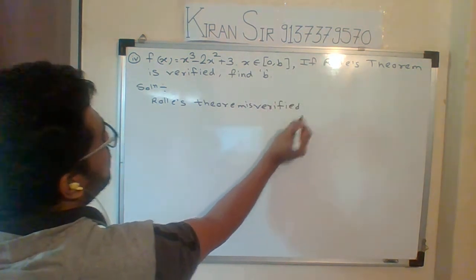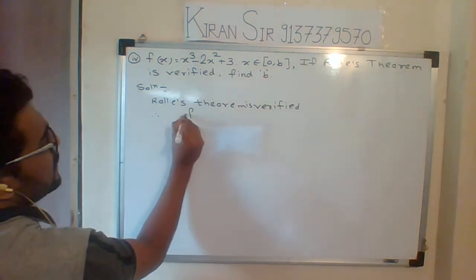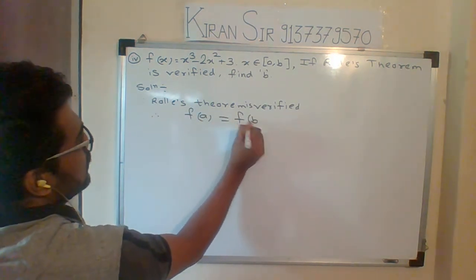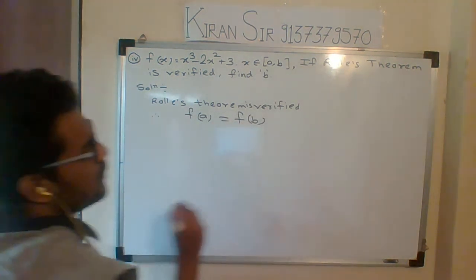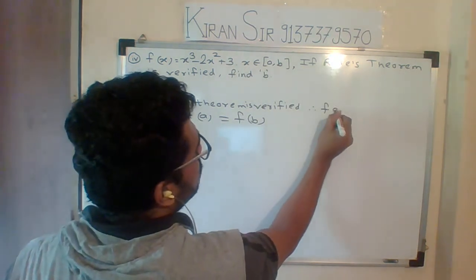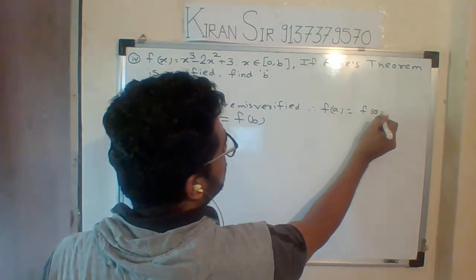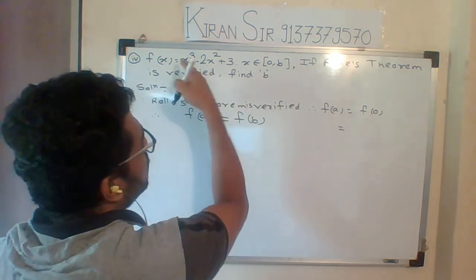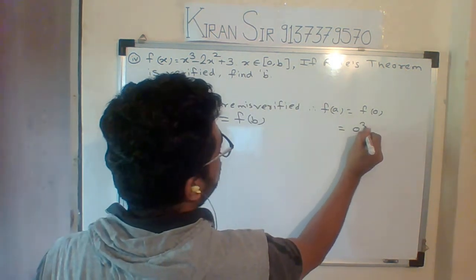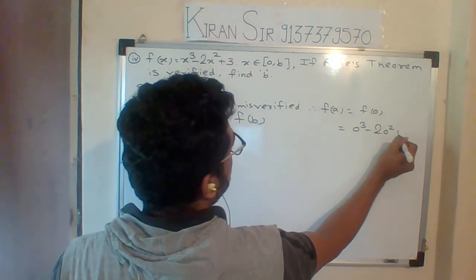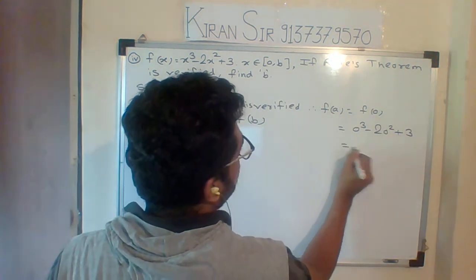Since it is verified, we can say f(a) is always equal to f(b). So what I will do first, I will find f(a). What is a value here? Zero. So I will put 0 in the function f(x): 0 cubed minus 2(0) squared plus 3. The final answer will be 3.